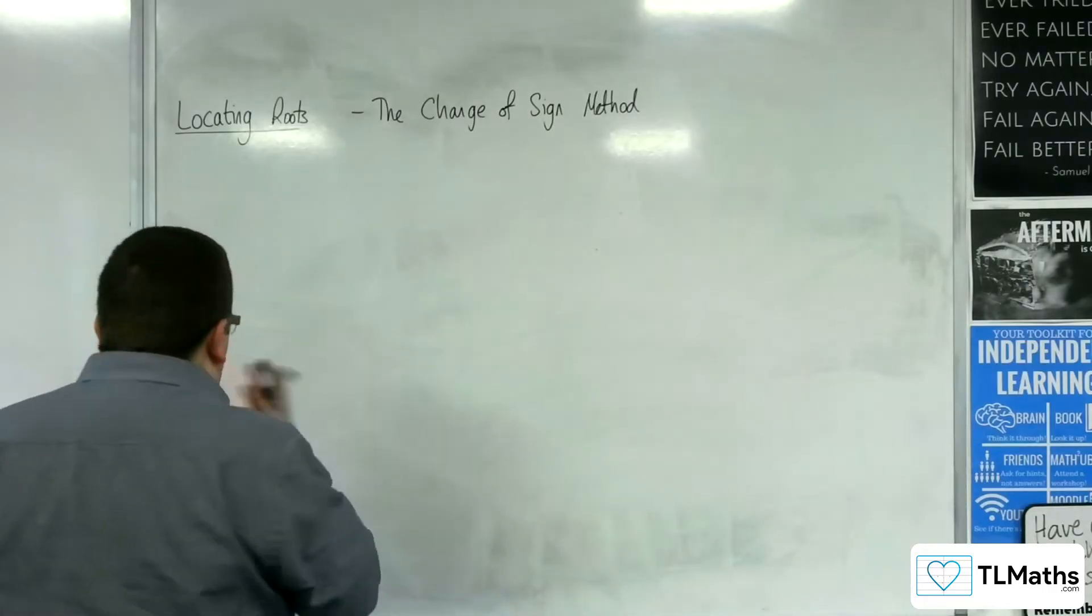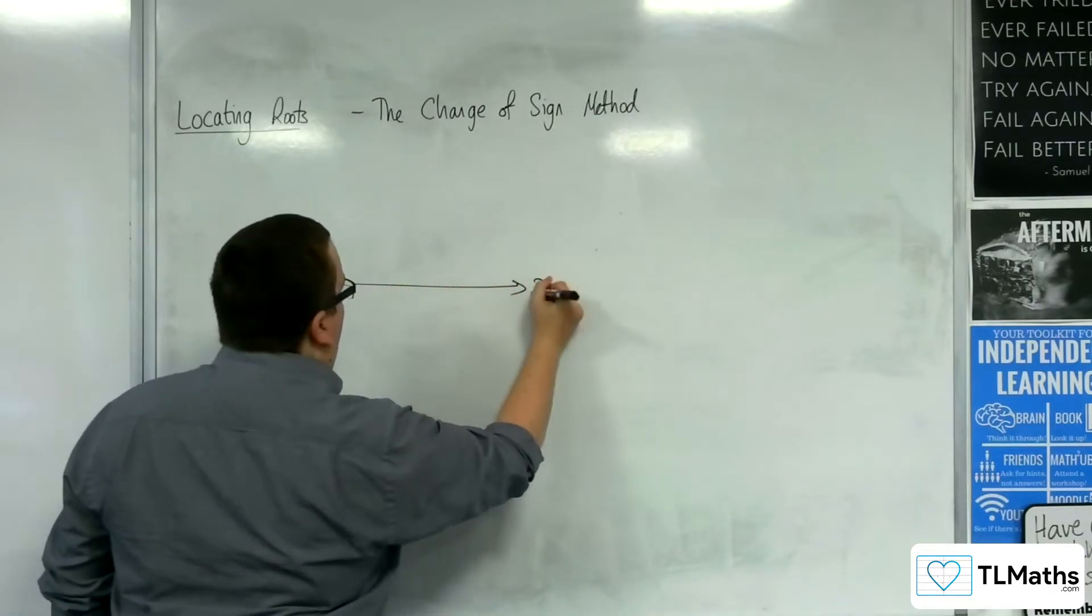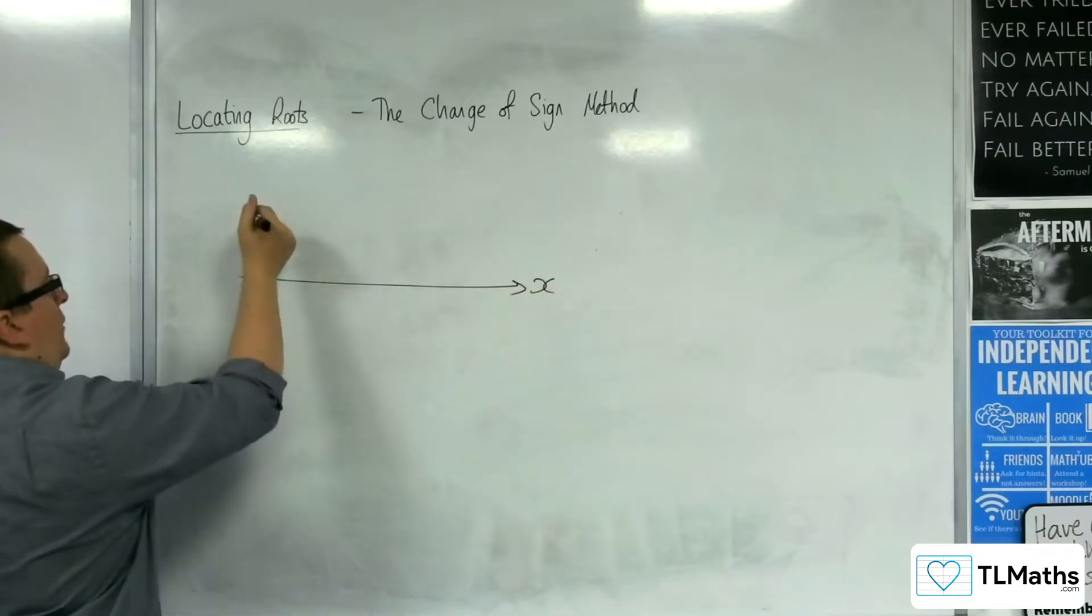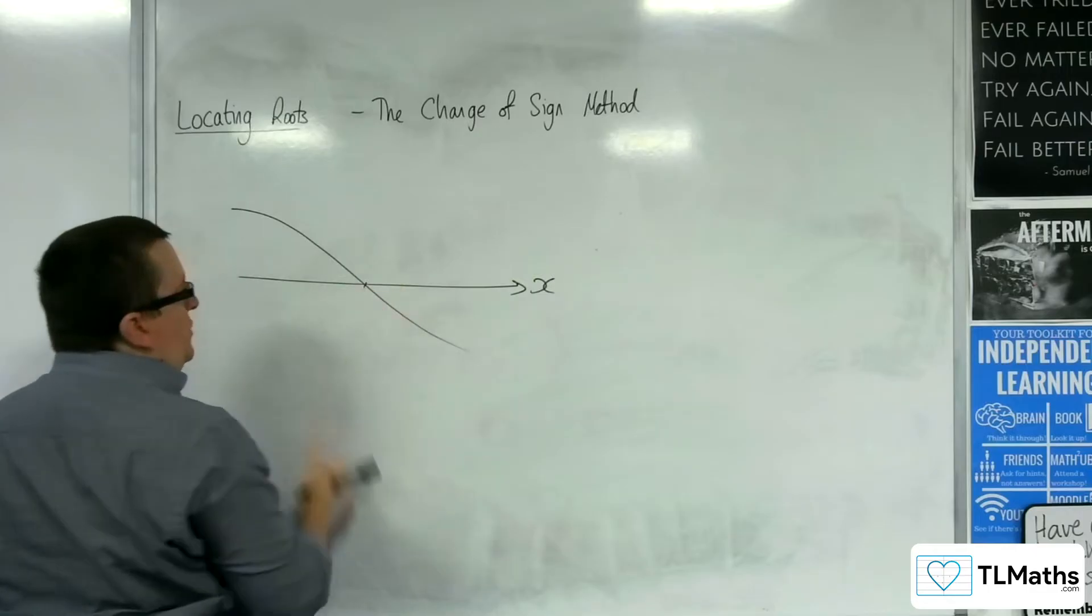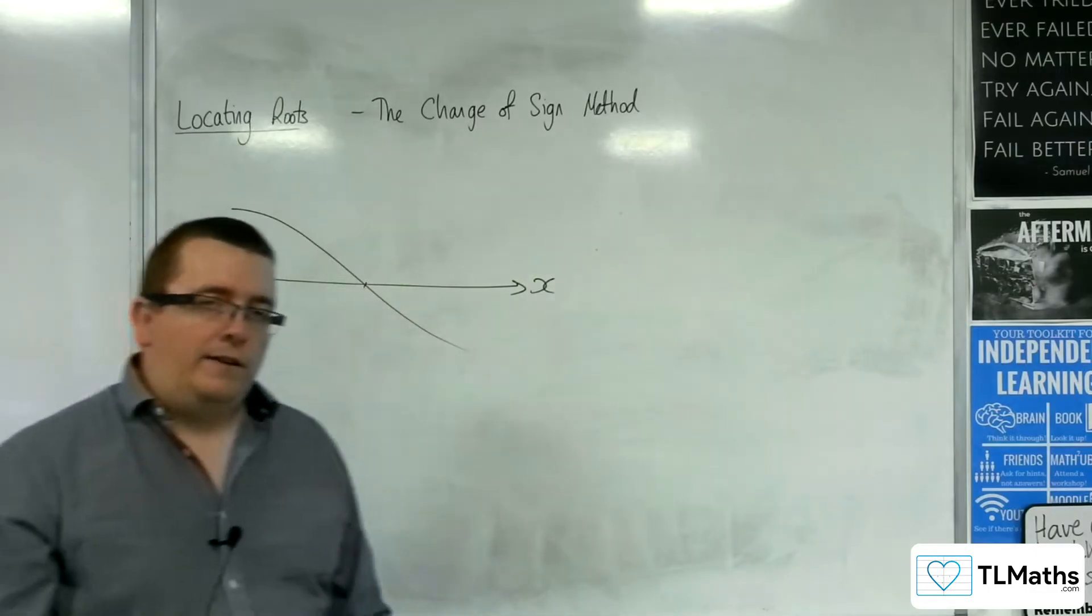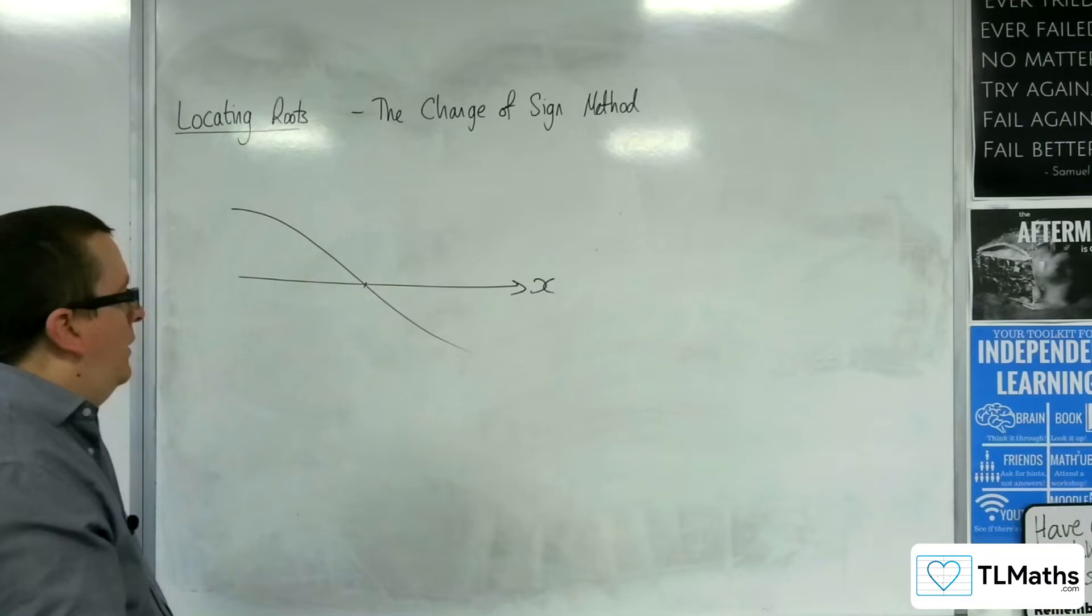So let's say that we have our x-axis and we've got a curve that is intersecting the x-axis. And this is the root that I am interested in. This is the point I'm interested in, that x value there.